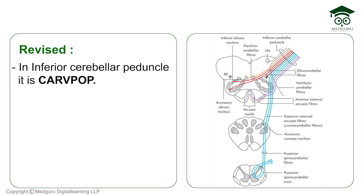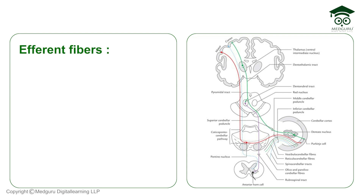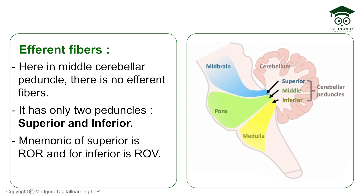Those are all the afferent fibers. To recap the mnemonics: top floor — Chacha playing TT, C-H-A-T-T; middle floor — people betting in rupees, R-P-S; ground floor — car with V-POP, C-A-R-V-P-O-P. Now coming to efferent fibers: the middle cerebellar peduncle has no efferent fibers, so we only need to discuss the superior and inferior cerebellar peduncles for efferent fibers.